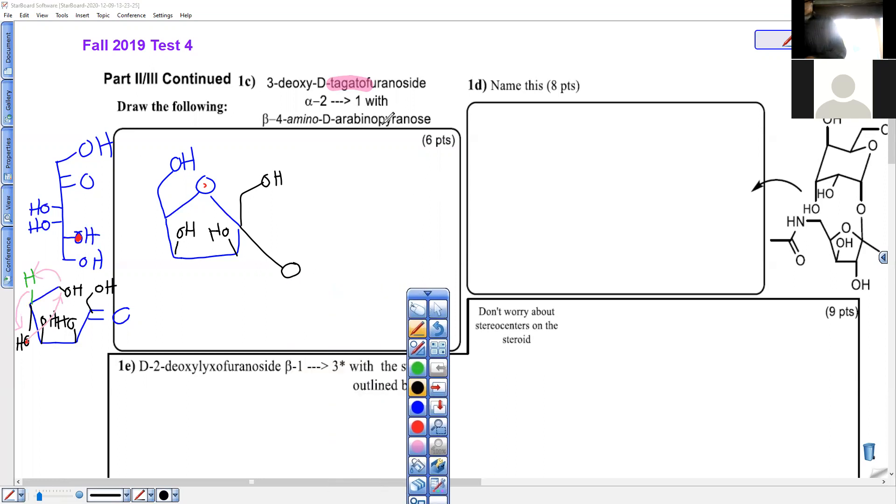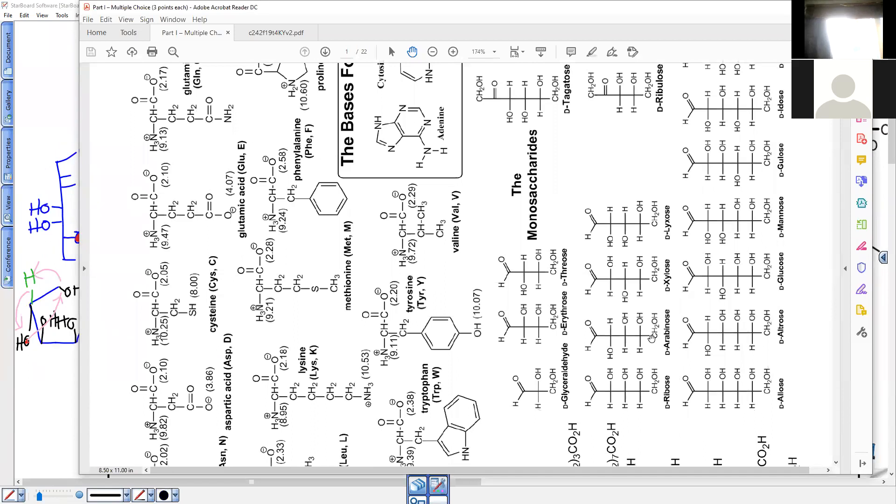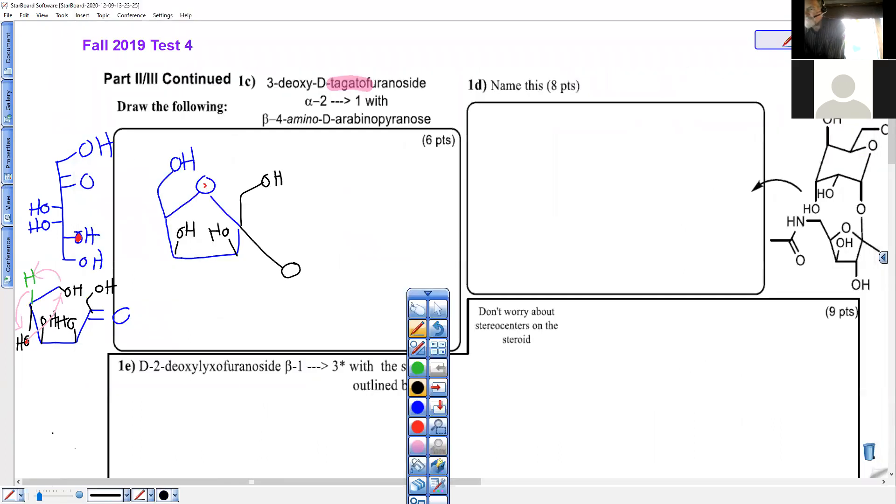We're also going to have to find for ourselves arabinose and make a pyranose. Arabinose is a five carbon aldehyde sugar as depicted right here. Arabinose left, right, right. Interesting at the bottom, it's the same as tagatose. I think that was totally accidental. And arabinose, and left, left, right. Aldehyde on top. None of those O's can make a pyranose.